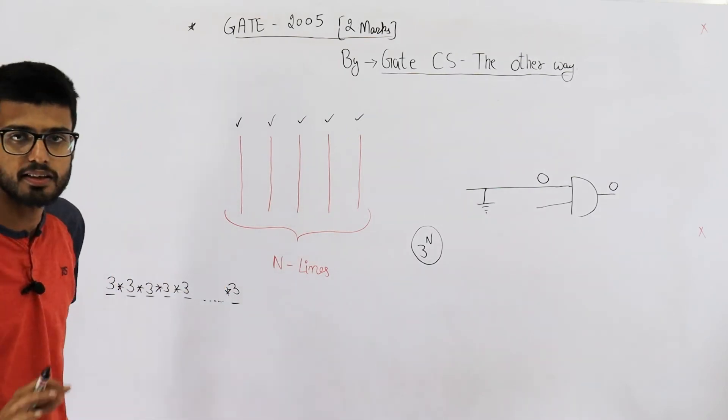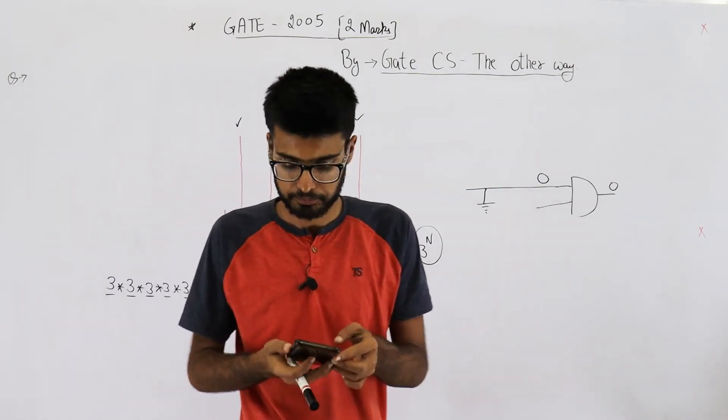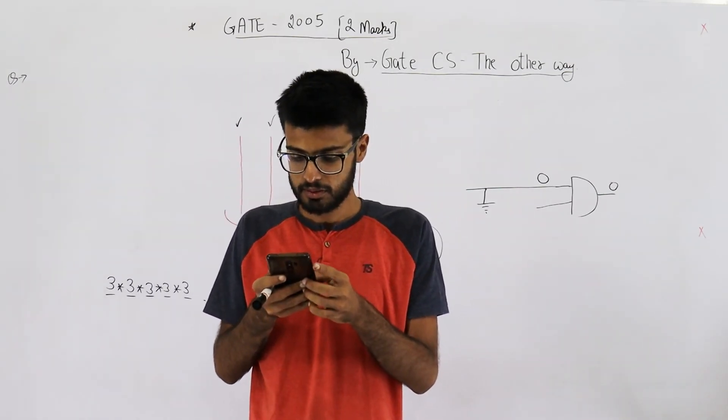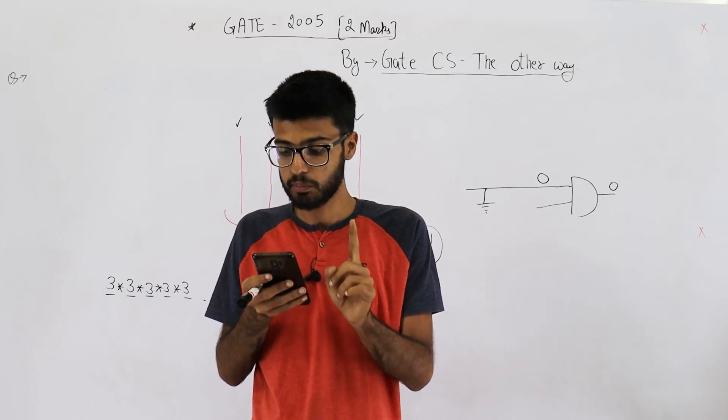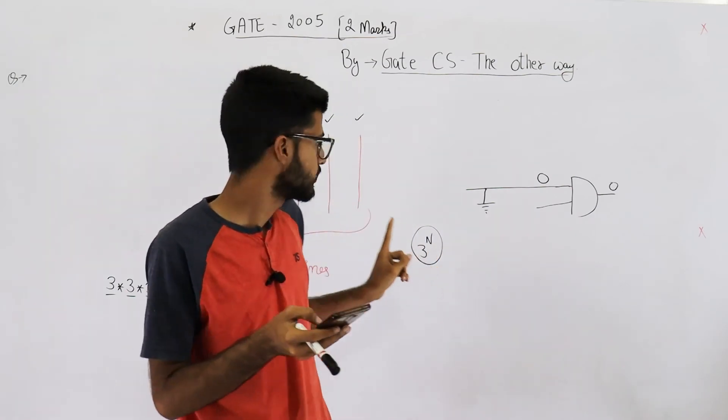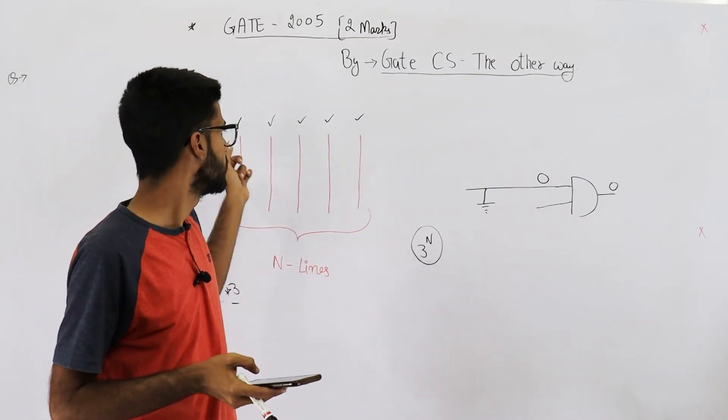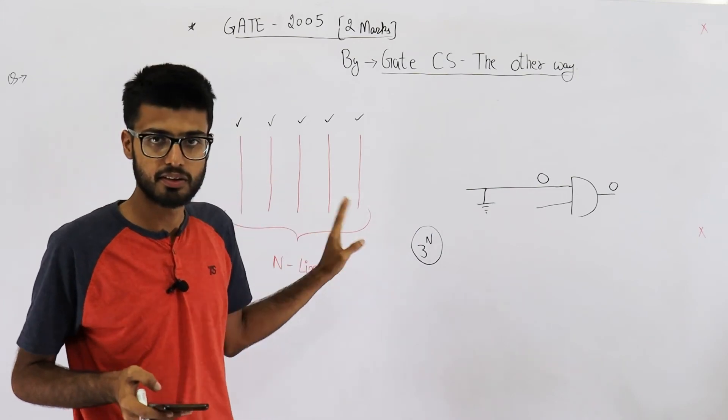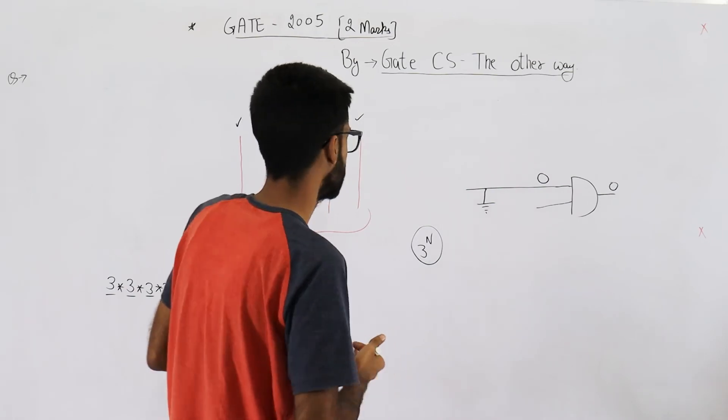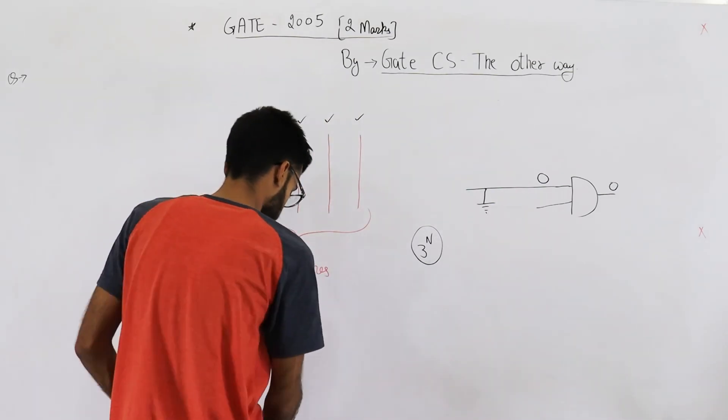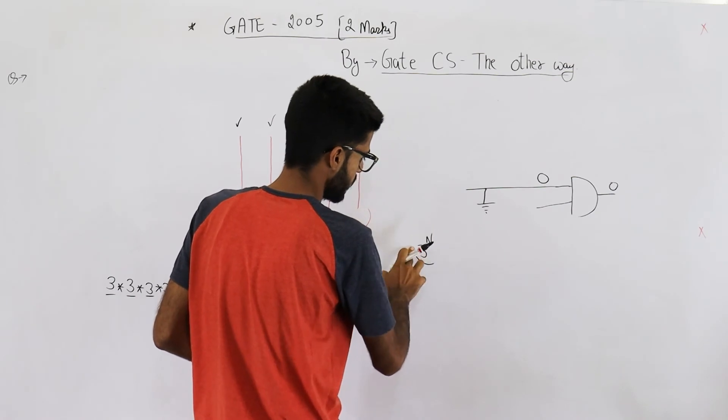fault - means the circuit is not at all faulty, it's completely working. And what they're asking in the question is the total number of distinct multiple stuck-at faults. That means you need to find the ways in which a fault can occur. But in this case where no wire has a stuck-at fault, there is actually no fault. We don't need to count it. So your answer will be 3^N minus this one case.